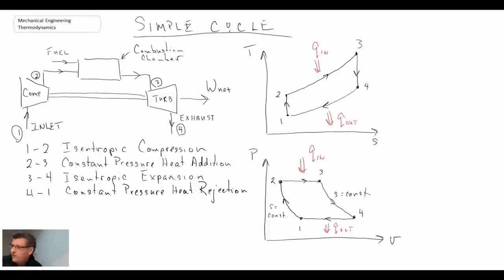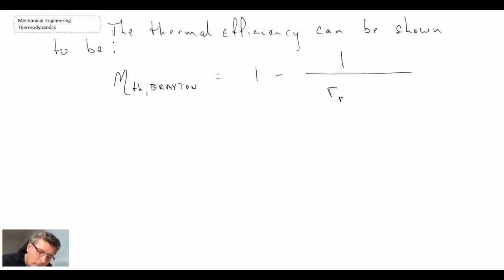Now what we're going to do, just like we did with the Otto and the Diesel and the Sterling, let's take a look at the thermal efficiency of this cycle. Okay, so that is the thermal efficiency. Now we have a new term in this equation and that is Rp. And little r subscript p refers to the pressure ratio in our compression stage. So that would be P2 divided by P1.